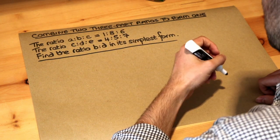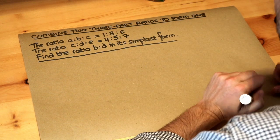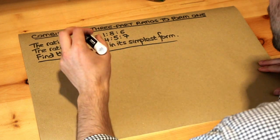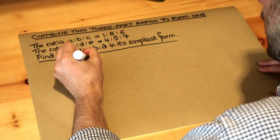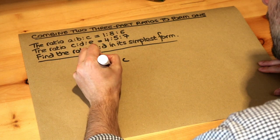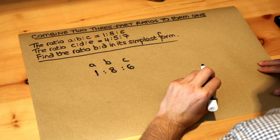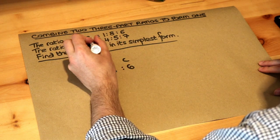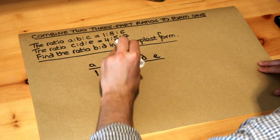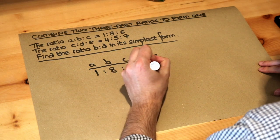Now if you understood how we combine two ratios into one where there were just two parts, this won't be too much more difficult. We do exactly the same method as we did before. So the ratio of A to B to C is 1 to 8 to 6. We can put it in a table like this, and then we've got the ratio of C to D to E, which is 4 to 5 to 7. Let's put that on a new line: 4 to 5 to 7.